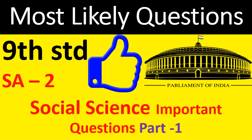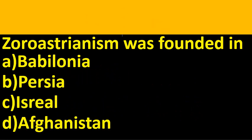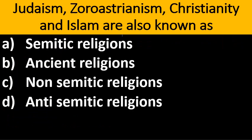First, lesson number one: History - Western Religions. The first multiple choice question: Zoroastrianism was founded in — options are Babylonia, Persia, Israel, Afghanistan. The answer is Persia. The answer is shown in a different color so you can follow it.